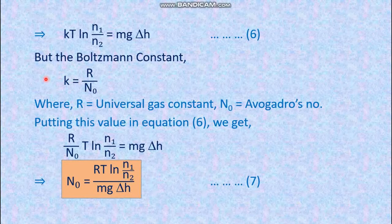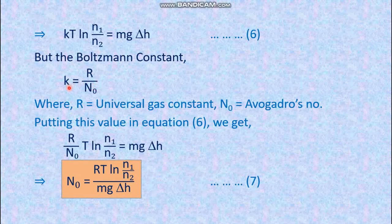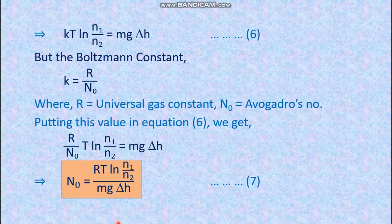Now, what is the Boltzmann constant k? R is the molar gas constant. Since one mole of gas contains N0 molecules, k is the molecular gas constant equal to R divided by N0. So k equals R/N0, and rearranging for Avogadro's number: N0 equals R·T·ln(N1/N2) divided by mg·ΔH. This is equation 7.